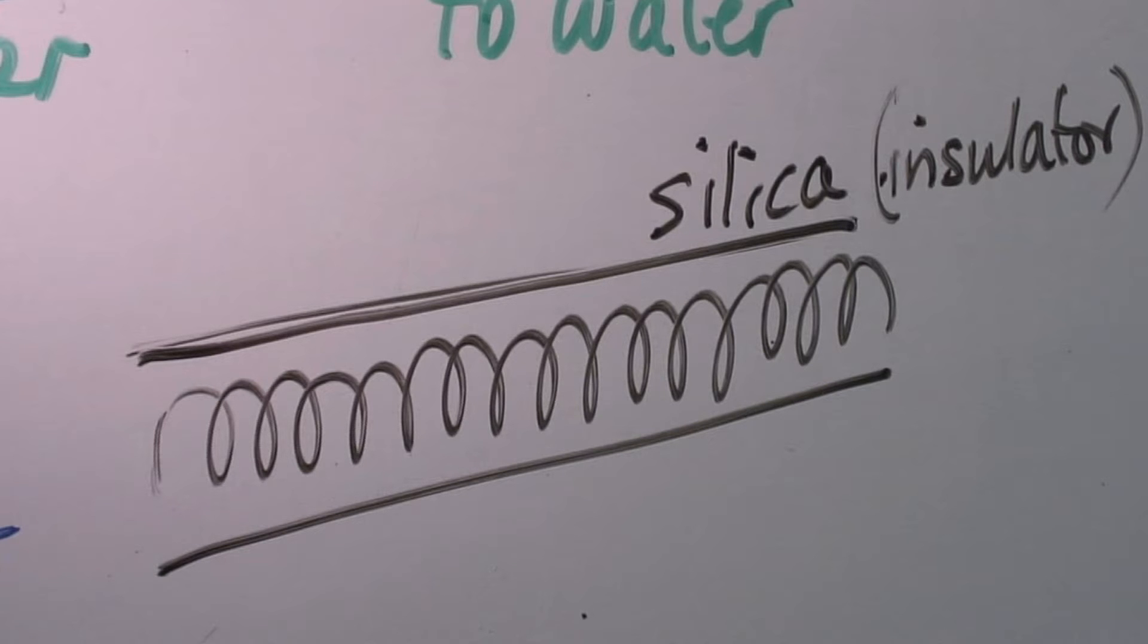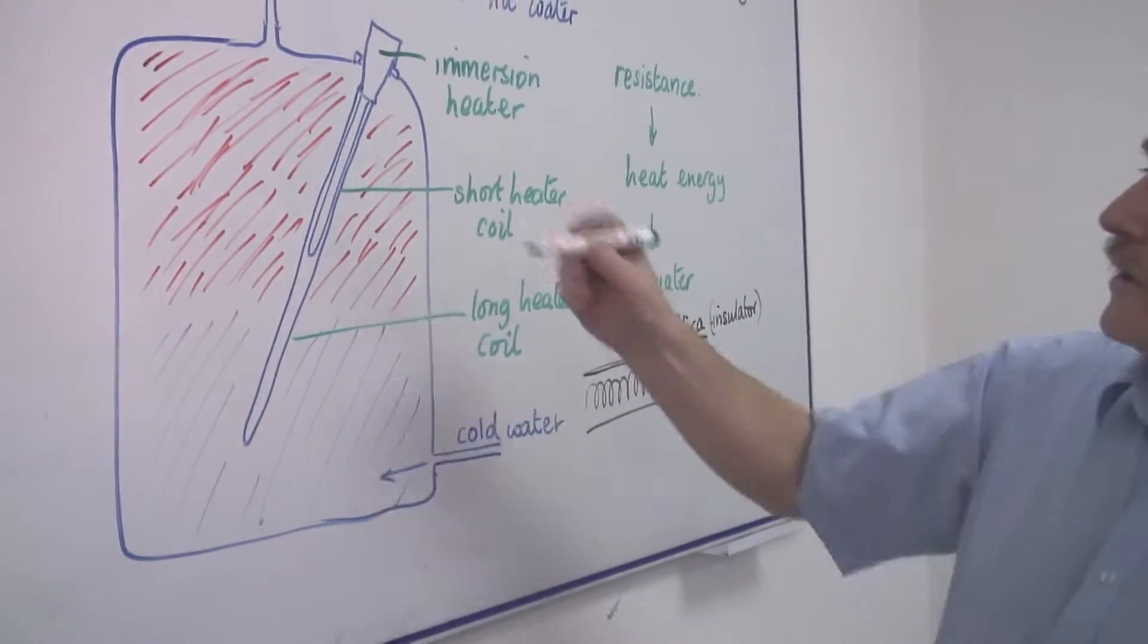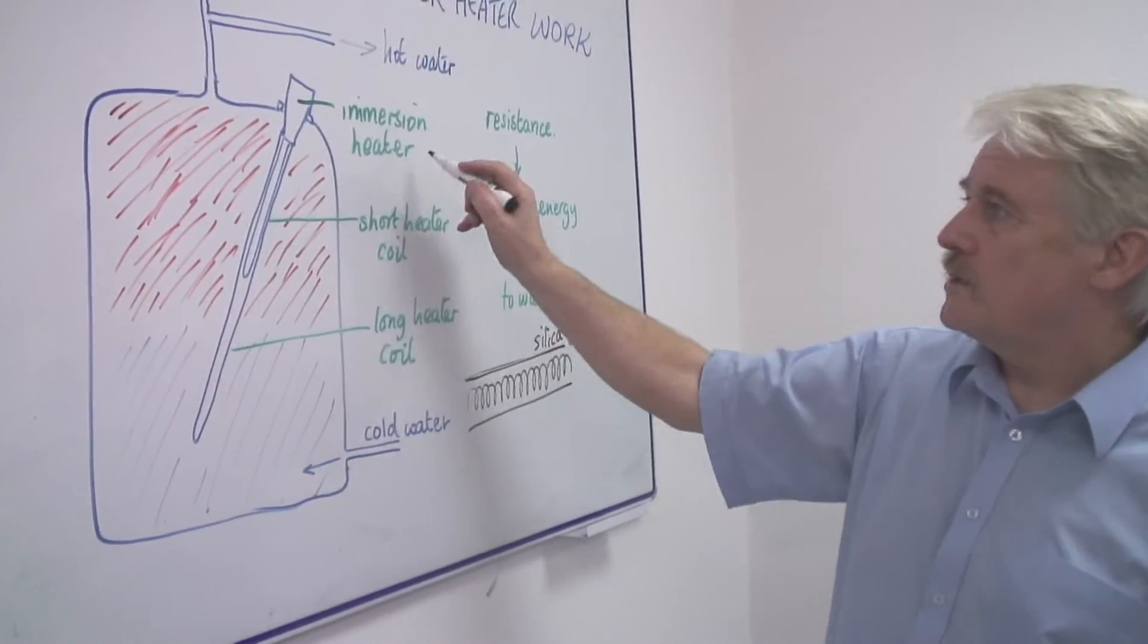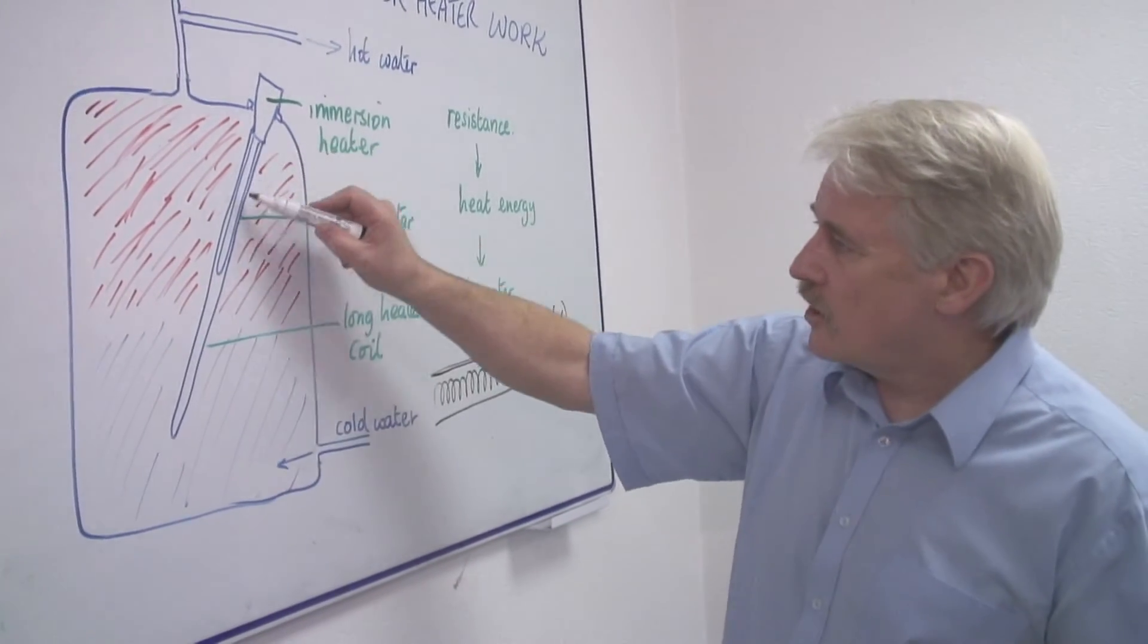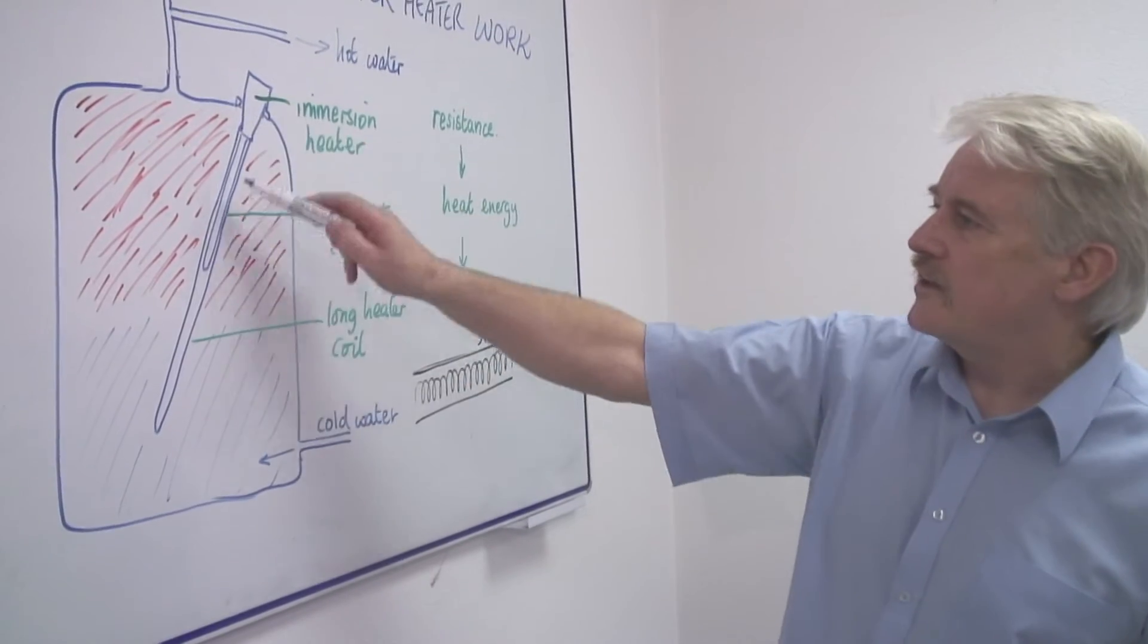Okay, back to the cylinder. Here is our cylinder and we have this device which we call an immersion heater. It has a long tube, this tube, silica tube with an element in it.